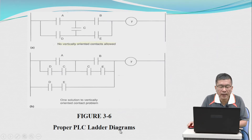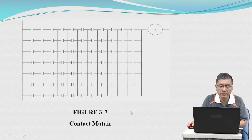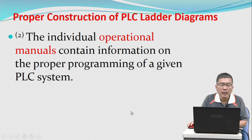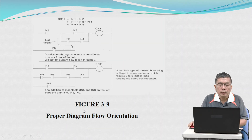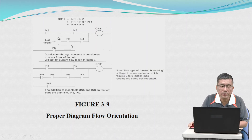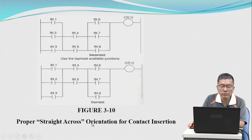Proper PLC ladder diagram examples: this is improper, this is the proper one. This is the limitation of the contact matrix. The individual operational manual contains information on the proper programming of a given PLC system. Proper diagram nesting required orientation — this is improper, this is the correct one. Proper diagram flow orientation — this is the correct one. Proper straight-across orientation for contact insertion — this is incorrect, this is correct.